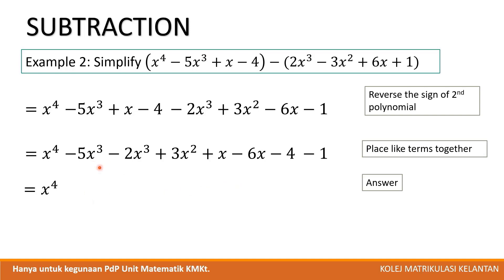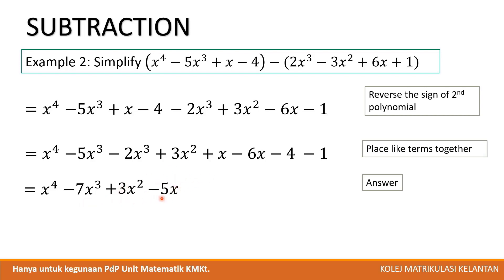After grouping, we simplify the expression for the final answer. We add -5x³ and -2x³ to get -7x³, plus 3x², then -5x, and then -5.